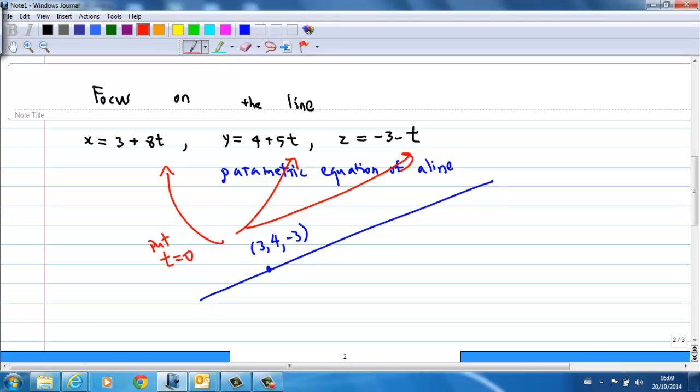Now, the line also has a direction. Let's call this direction v. The direction is given by the vector (8, 5, -1). We can read it off from these coefficients: 8, 5, -1. So we know the direction of the line is given by 8, 5, -1. This means that this line is parallel to the vector (8, 5, -1).